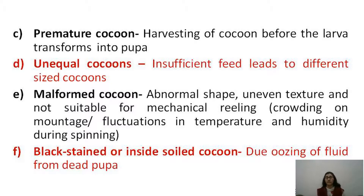Black stained or inside soiled cocoons occur when the pupa dies inside due to disease — fungal or bacterial. The dead pupa oozes fluid, soiling the cocoon and staining adjoining good cocoons as well. Such black stained or soiled cocoons must be removed immediately.